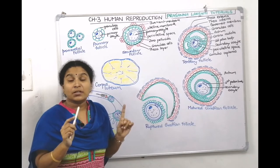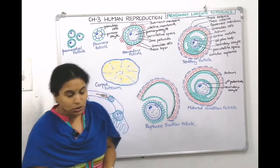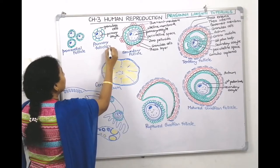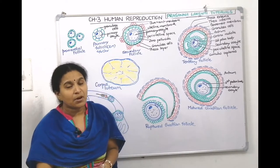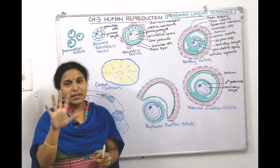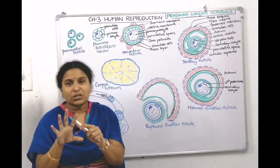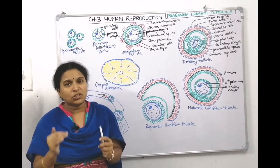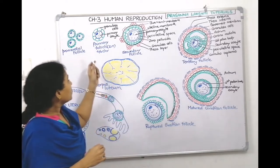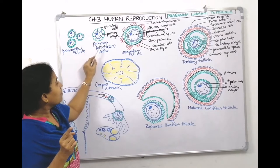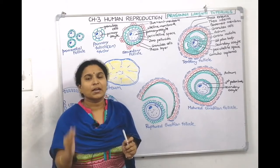The primary follicle enters maturation phase and starts meiosis I. Being diploid, it has 46 chromosomes. It starts prophase I, which has five sub-stages: leptotene, zygotene, pachytene, diplotene, and diakinesis. It gets arrested in the diplotene stage because LH and FSH hormone production is low. The meiosis I prophase I stage is arrested, and it remains as a primary oocyte.